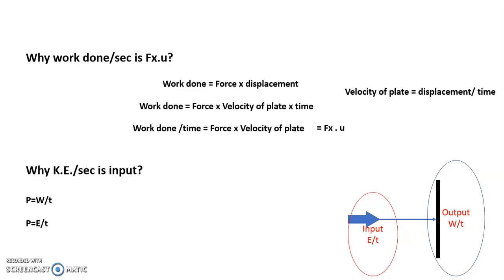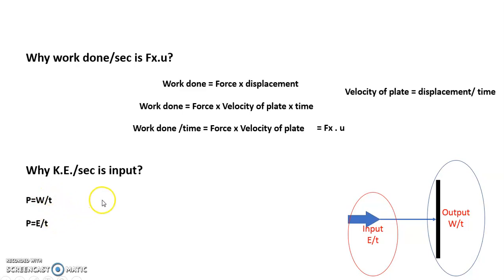Power is work done per time, and power is also energy per time. We use work done per time to measure output power, and energy per time — specifically kinetic energy per second — to measure input power. In both cases it is power, but the two forms apply to their respective circumstances. Output power divided by input power gives us the efficiency.